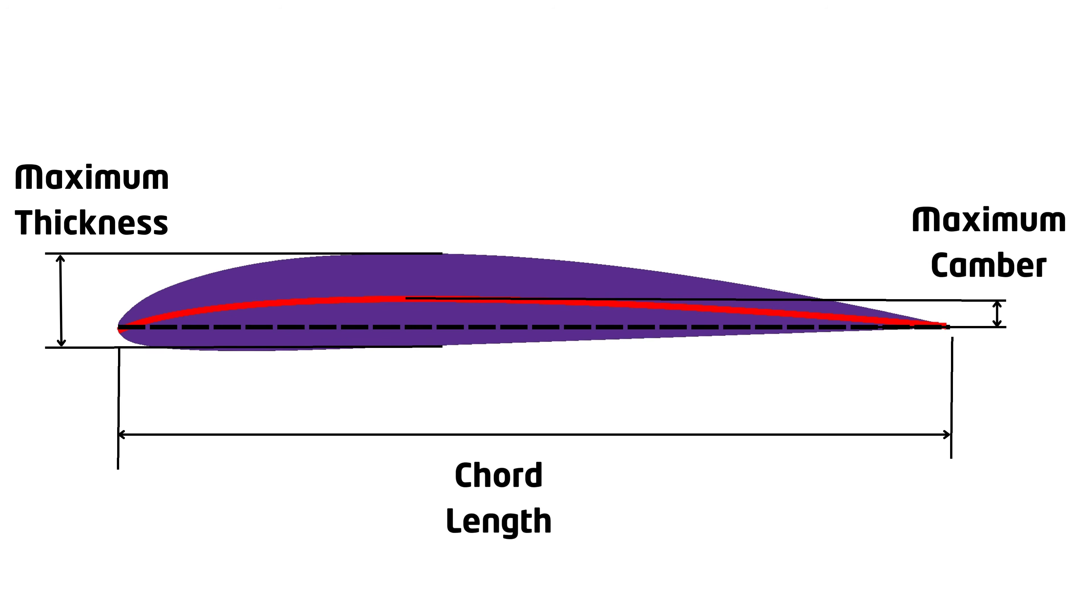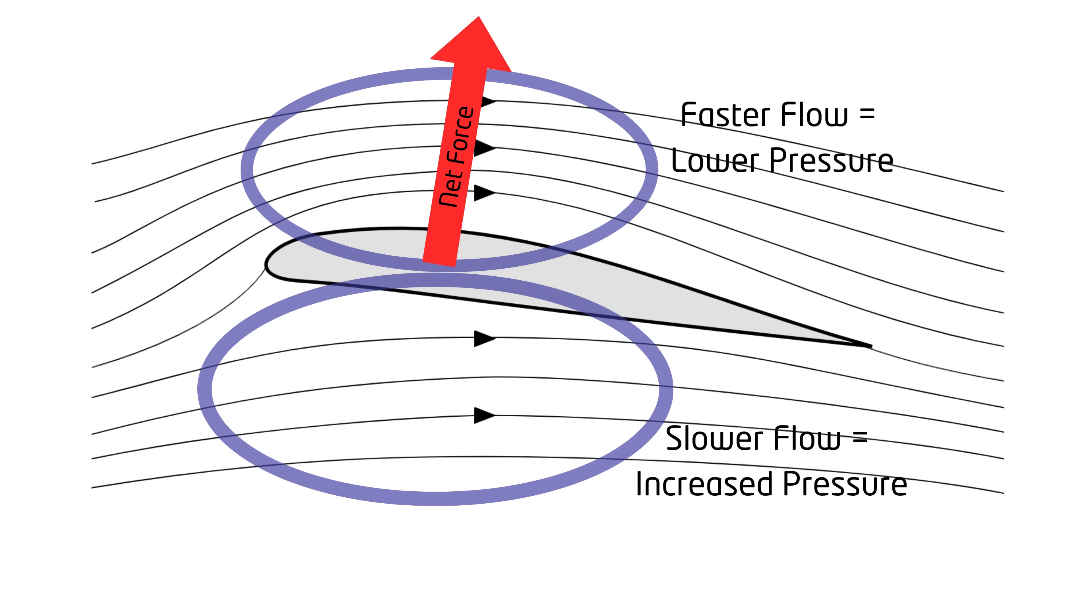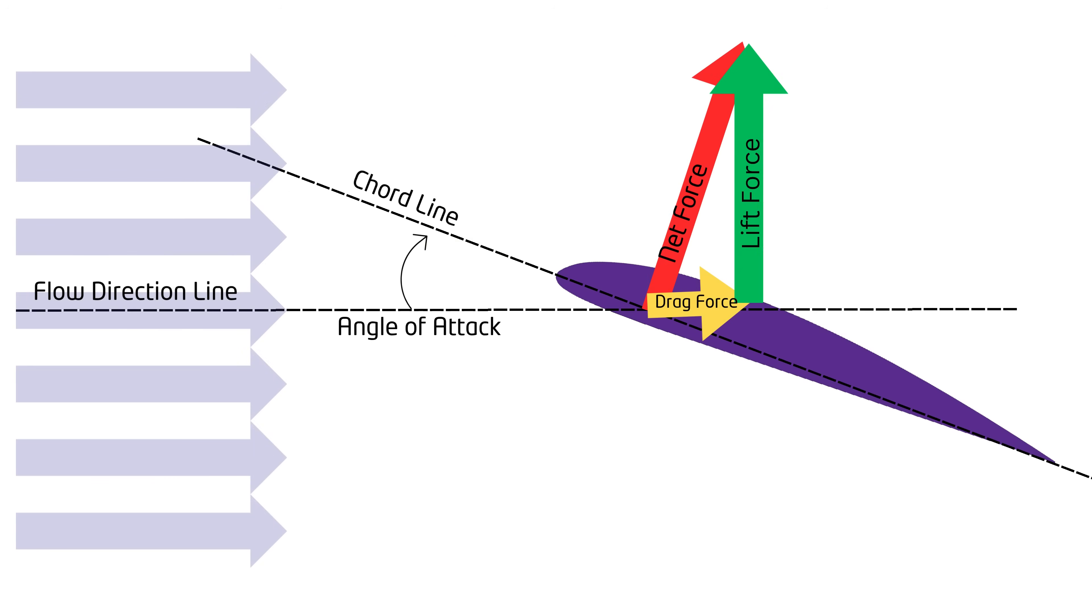As a summary, the geometry of an airfoil can be described using the airfoil maximum thickness, maximum camber, and chord length. Airfoils produce lift by accelerating the flow above the airfoil and slowing down the flow below it, thus producing higher pressure below the airfoil than above according to Bernoulli's principle, which results in a net force which points mostly upward.